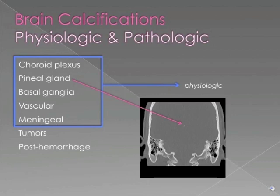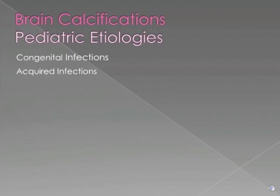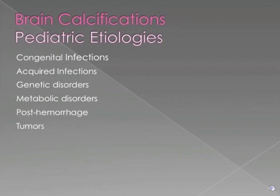Non-physiologic calcifications in the adult brain include those occurring in tumors and those occurring in post-hemorrhagic brain tissue. Categories of disease which lead to calcifications of the pediatric brain include congenital infections and acquired infections, genetic disorders and metabolic disorders, post-hemorrhagic brain, and tumors — including post-hemorrhagic calcifications found in neonatal hypoxic ischemic encephalopathy.